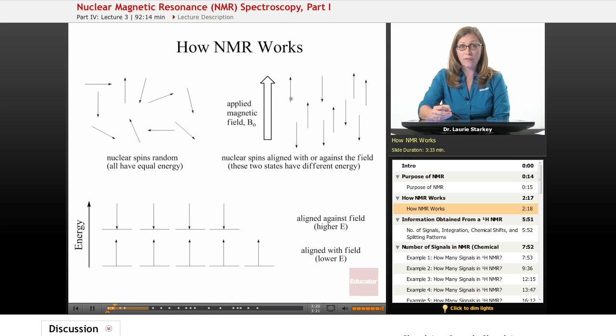There's only two possible orientations they can have. They can either be aligned with the field pointing in the same direction or aligned against the field pointing in the opposite direction. So these spin states now are only two possibilities.